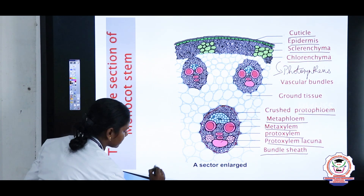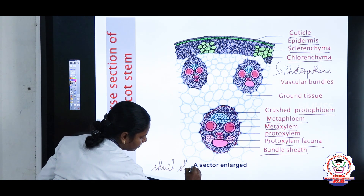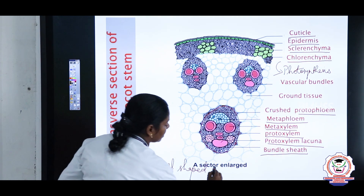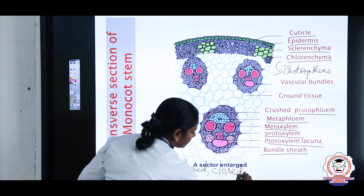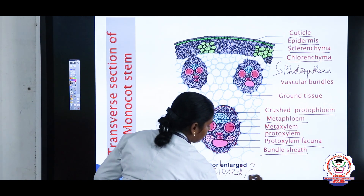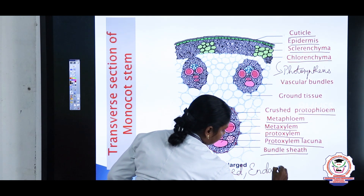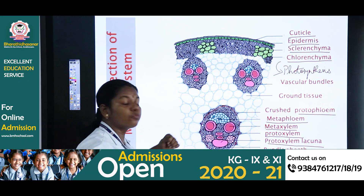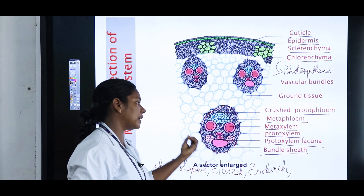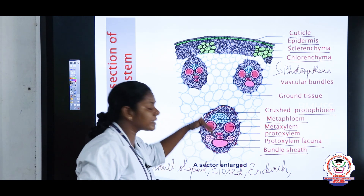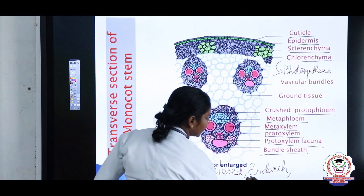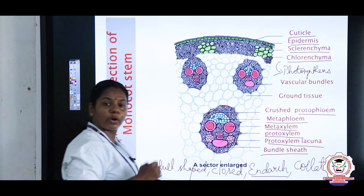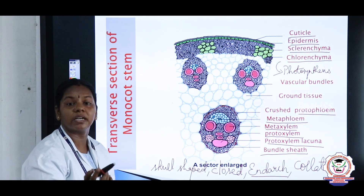The vascular bundle is skull-shaped. Cambium is absent in monocot stem, so the vascular bundle is said to be closed. The xylem is endarch, conjoint, and collateral — phloem and xylem are arranged next to each other. Proto xylem is towards the center and meta xylem towards the periphery, so the condition is endarch and collateral.